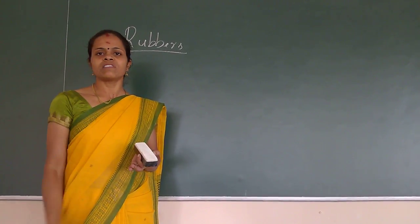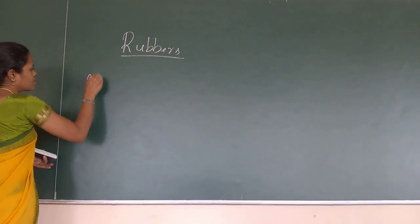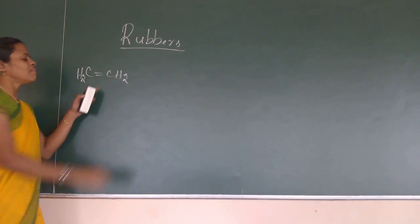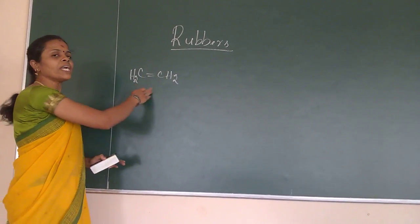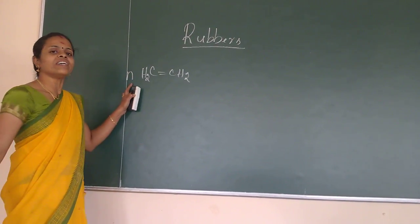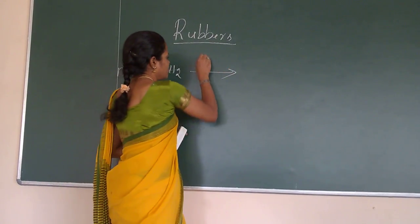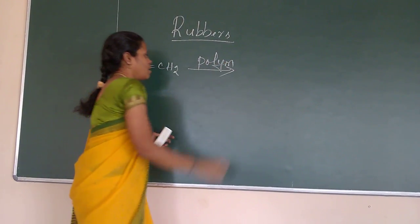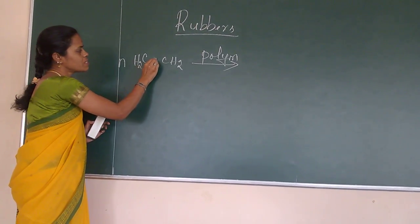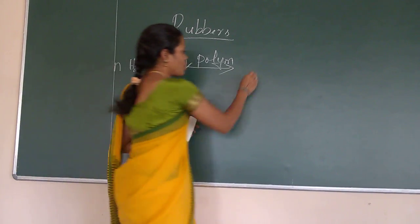I wish to explain it by taking one simple example: Polyethylene. We know very well this is ethylene. So I am going to polymerize this ethylene. So what is that mean? First I must take n number of ethylene.